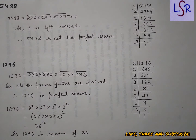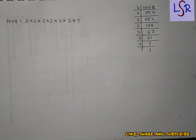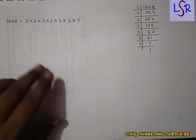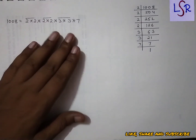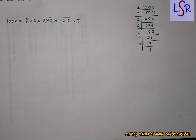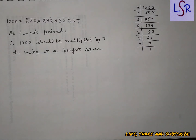Now let's move to question number 3. Question 3 states: find the smallest natural number by which 1008 should be multiplied to make it a perfect square. For that we first find the prime factors of 1008. We pair them and see that 7 is left unpaired, which means it is not a perfect square. Therefore 1008 should be multiplied by 7 to make it a perfect square.